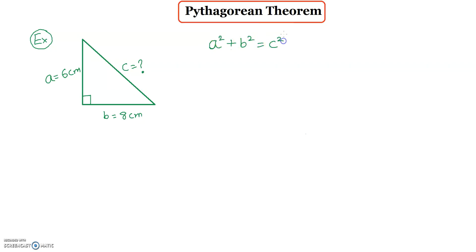I will write the theorem first. Then I will substitute the numbers. So a is 6, I will write that down. b is 8.